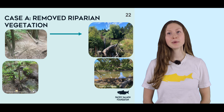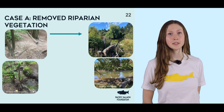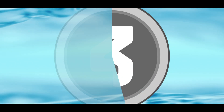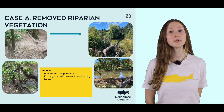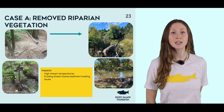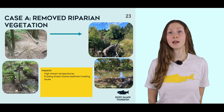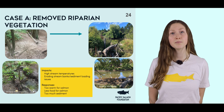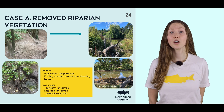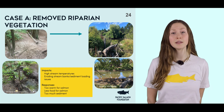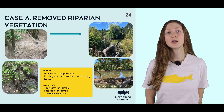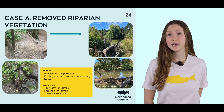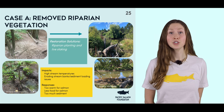Let's review. What happens when riparian areas are removed? The impacts to streams are that without the shade of riparian plants, stream temperature can increase. Without the roots of riparian plants holding the soil together, the stream bank can erode and cause sediment loading issues. This can make streams a stressful place for salmon to live — it's too warm, it offers less food in the way of terrestrial insects, and it can cause issues with turbidity.